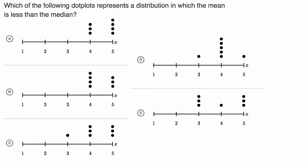We have a question here on data representation. Which of the following dot plots represents a distribution in which the mean is less than the median? Pause this video and see if you can answer that.